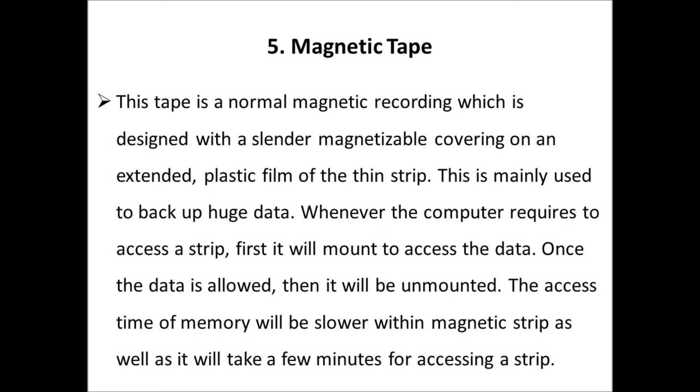Fifth one: magnetic tape. This tape is a normal magnetic recording designed with a slender magnetizable covering on an extended plastic film of thin strip. This is mainly used to back up huge data. Whenever the computer requires to access a strip, first it will mount to access the data. Once the data is accessed, then it will be unmounted. The access time of memory will be slower within magnetic tape, and it will take a few minutes for accessing a strip.